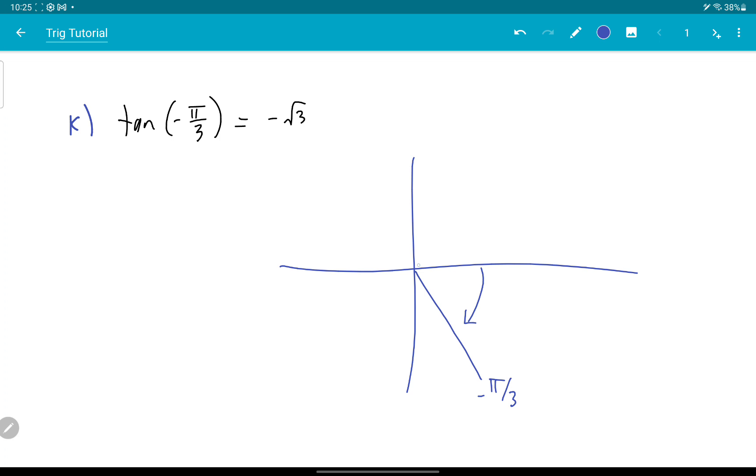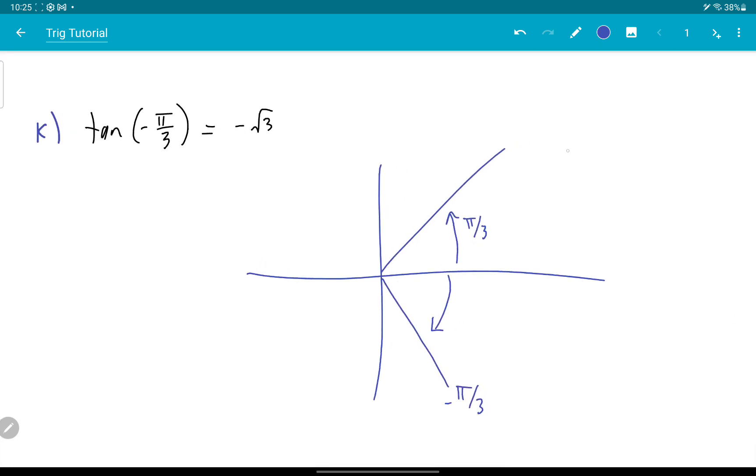So if I reflect that into the first quadrant, I get just π over 3 here. Tan of π over 3 is, so I'm visualizing my memorized triangle in my head, and what am I getting? I'm getting root 3 over 1.